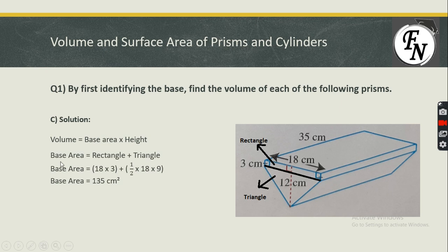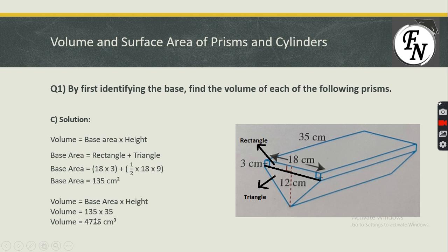The base area equals rectangle plus triangle: (18 × 3) + (½ × 18 × 9) = 54 + 81 = 135 cm². Volume = Base Area × Height = 135 × 35 = 4725 cm³. These were the questions on the volume of prisms. I hope you understood all the concepts — if you have any queries, please comment below. Thank you.